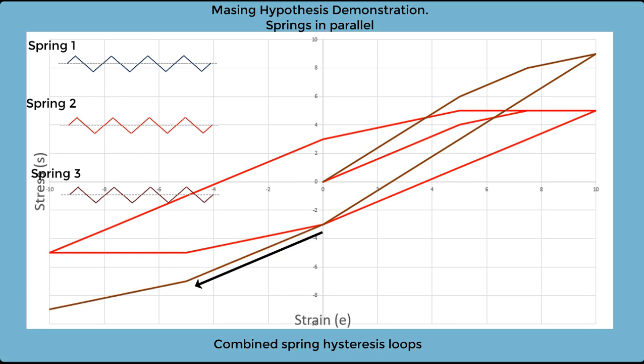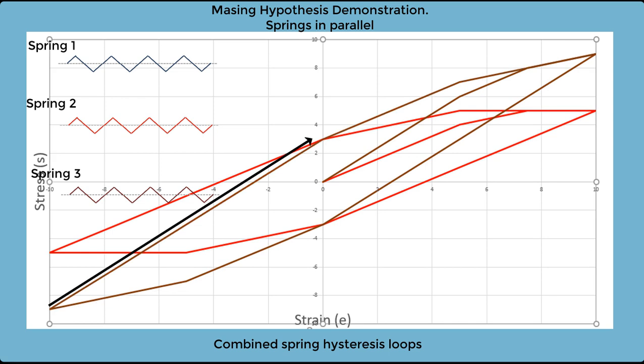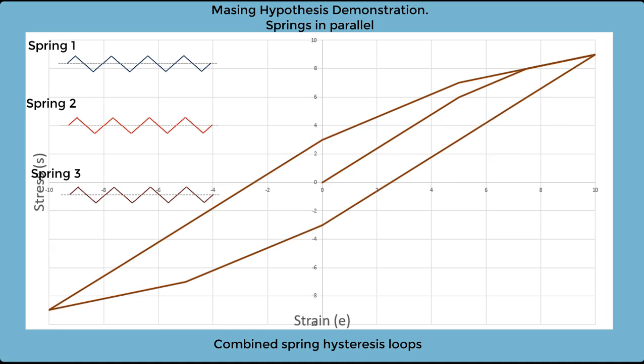Now as we unload further, we get an initial drop in stiffness from spring 1, and a second drop in stiffness from spring 2. A further loading reversal gives us an initial elastic response, and then two successive drops in stiffness as we hit first again yield of spring 1, and then of spring 2. So now let's tidy up and look at the combined hysteresis loop for springs 1, 2, and 3 in parallel.